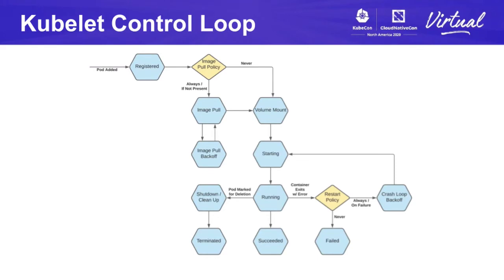Let's take a closer look at the control loop used by Kubelet to run a pod. This is the loop that was developed for the Krustlet project based on observed behavior in Kubernetes. When a pod is added, some validation happens, and then the image pull policy is evaluated to determine if images need to be pulled. If an issue arises when pulling an image, an exponential backoff is used to retry. After images are pulled, we provision storage volumes, which could also include collecting config maps and secrets for the pod. Next, containers are started and we begin monitoring for exits. If an error occurs, the restart policy is evaluated, and the pod either retries with backoff or enters a failed status.